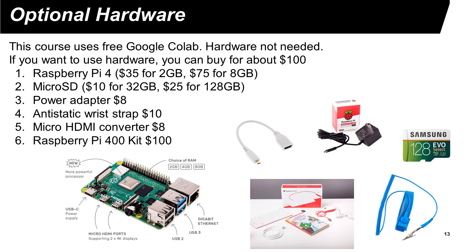For this course, you do not need to purchase any hardware — you can do the assignments using Google Colab. If you do want to use hardware, you can purchase a Raspberry Pi 4, along with a micro SD card and a power adapter. It is advisable to wear an anti-static wrist strap to discharge your body before touching the circuit board, as static charge may damage it.